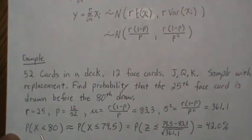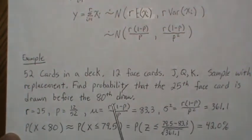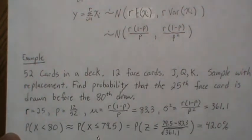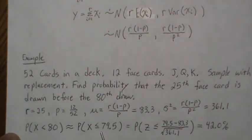So now we want to find the probability that X is less than 80, drawn before the 80th draw. So that means X is less than or equal to 79. But with the continuity correction, we add a 0.5.